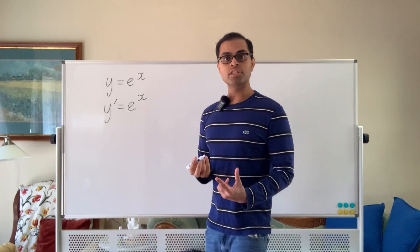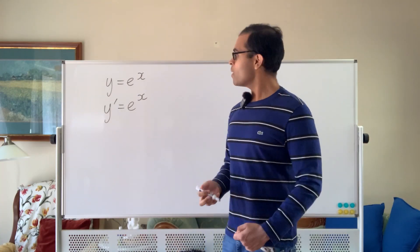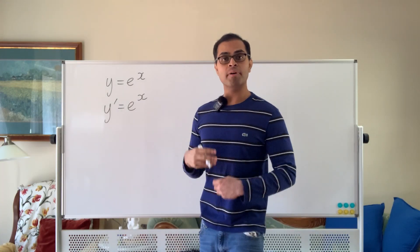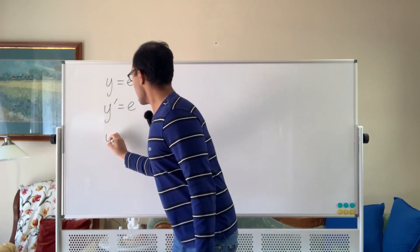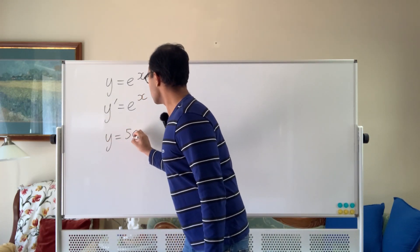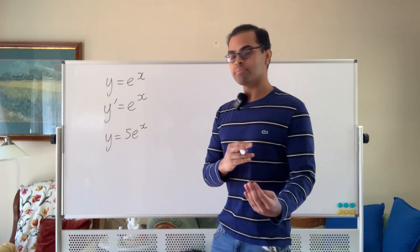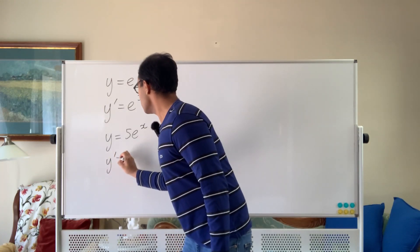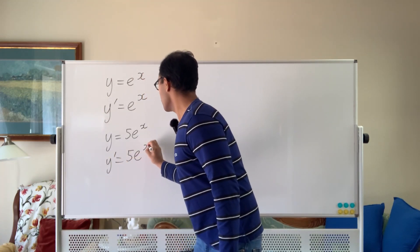This is one of the reasons the exponential function is so famous in calculus. Of course, we can also multiply this by a constant and get the same property. For example, if y is equal to 5 times e to the x, then when you differentiate that, the constant comes out, so y prime is also going to equal 5 e to the x.